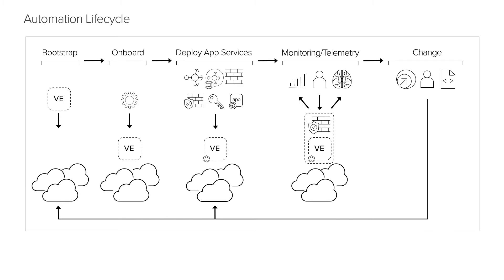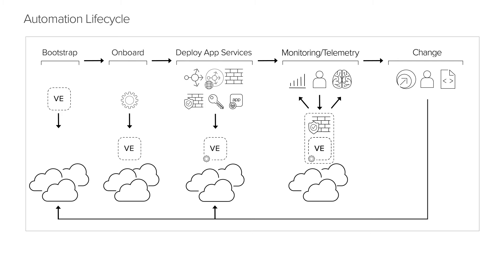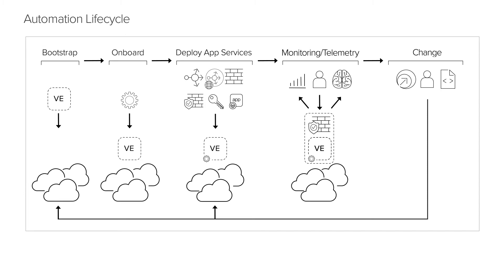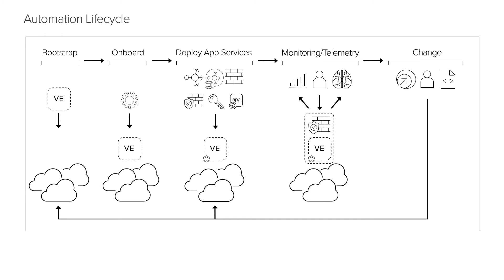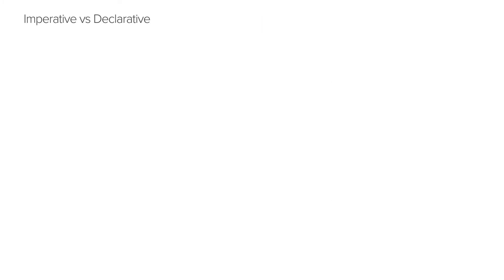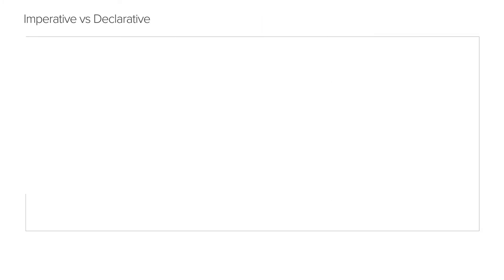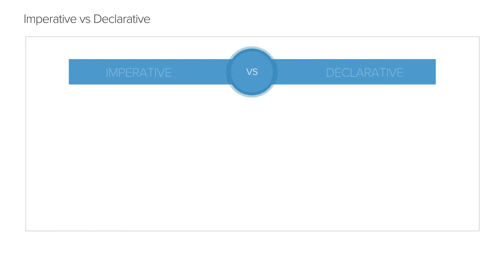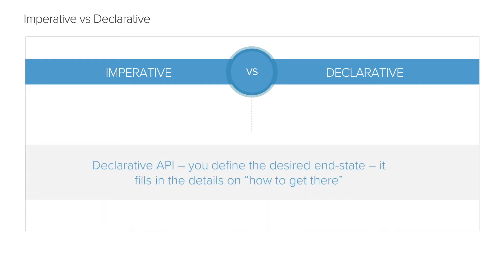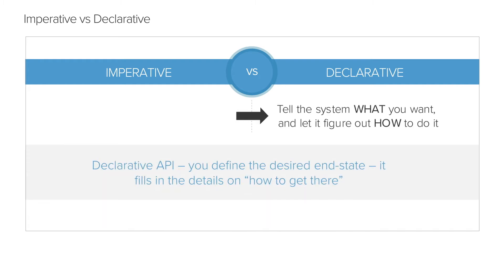To support this automation lifecycle, we offer the F5 Automation Toolchain – a group of free, open-source, supported, and interrelated tools designed to help you automate the delivery of security and network application services. The Automation Toolchain provides a single declarative API call abstraction layer to simplify deployment of complex BigIP configurations. Declarative means you only need to know what the end state looks like, not the steps to get there.